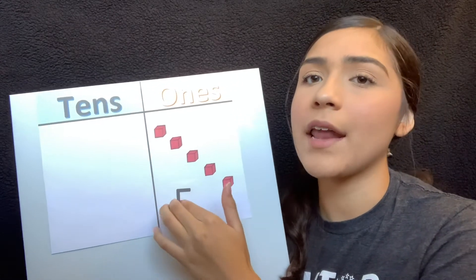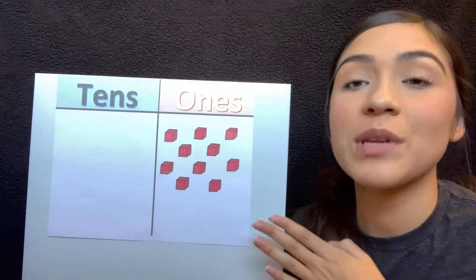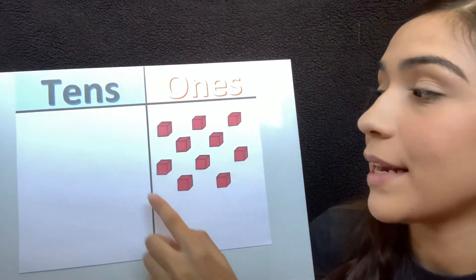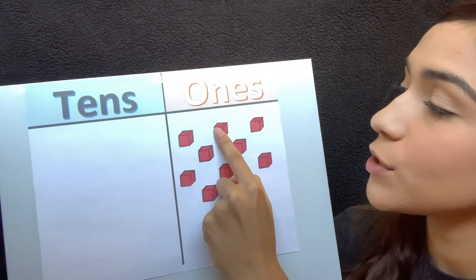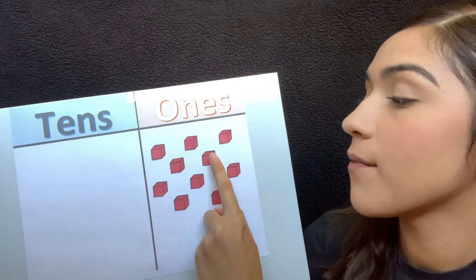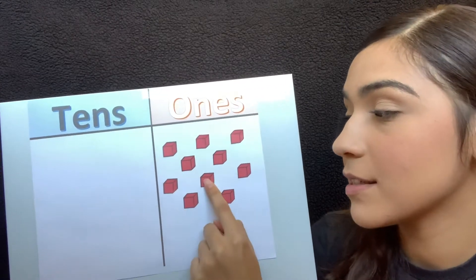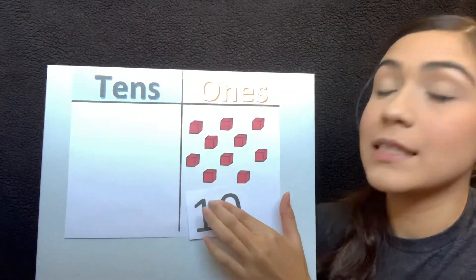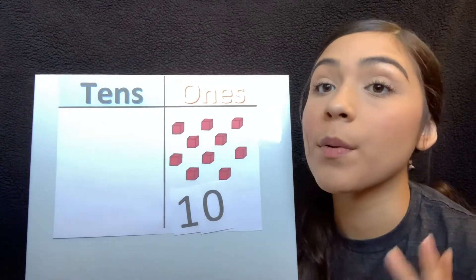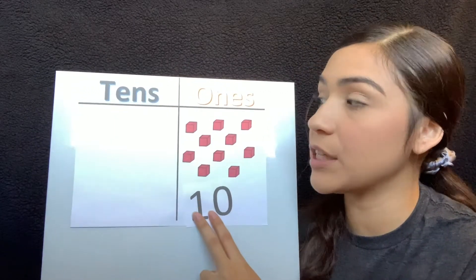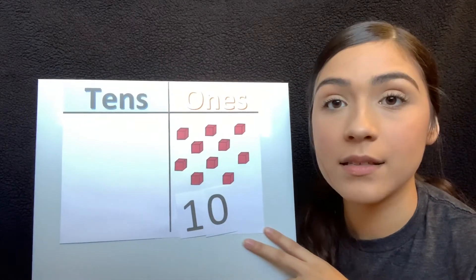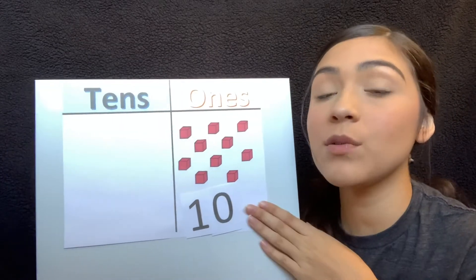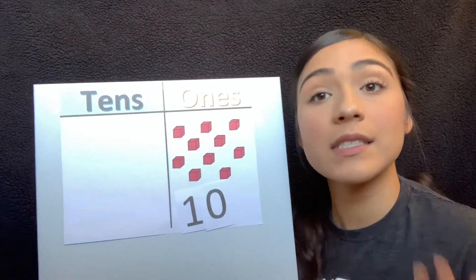Now what if I add another five ones? So now that I've added five more, should we count how many we have now? Ready? One, two, three, four, five, six, seven, eight, nine, ten. So now we have ten ones. But remember our rule? We can't have two digits in one place. Now when that happens we put our ten ones and stack them up together to make a ten block.